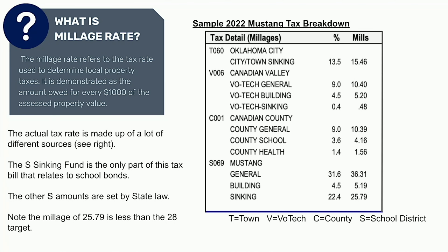The T for town, V for vocational, C for county, and S for school — you can see those there on the far left of the tax bill.